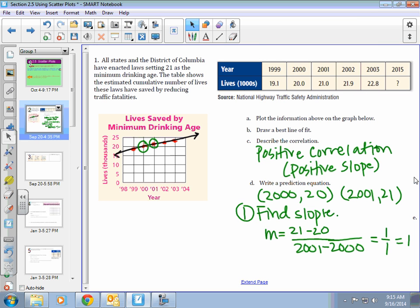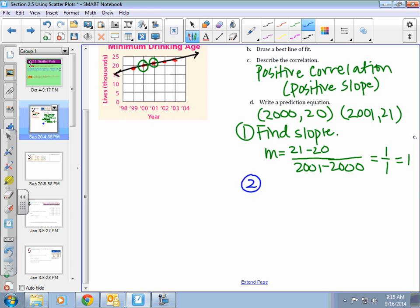The second thing that we need to do is find our y-intercept. I am going to put it in point slope. Y minus 20 is equal to my slope, and then X minus my X value. I would distribute that 1, which I really don't need to do, because everything times 1 is just itself. Then, I am going to add 20 to the other side. Y is equal to X minus 1980. Here is our equation.